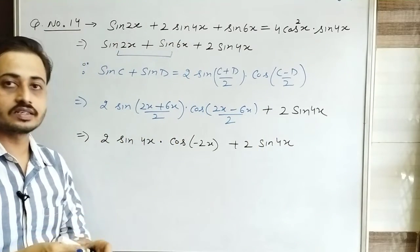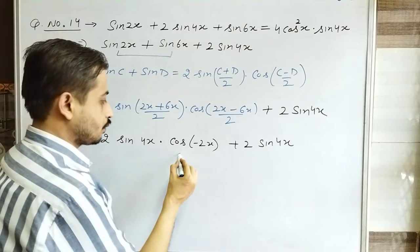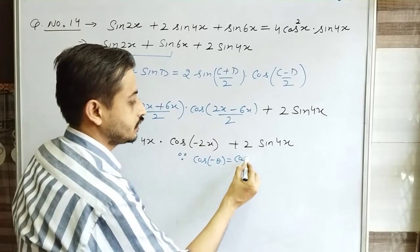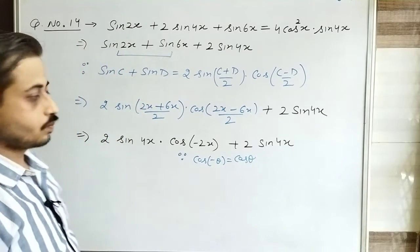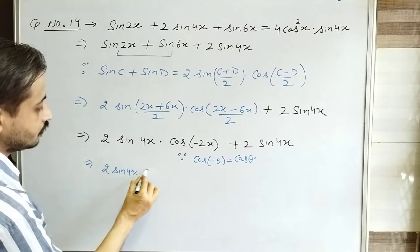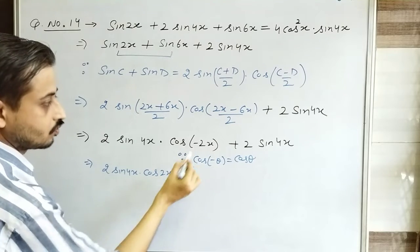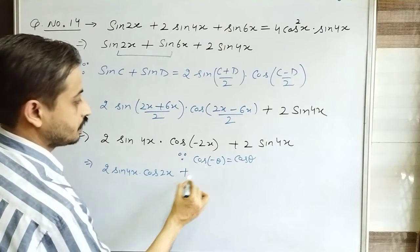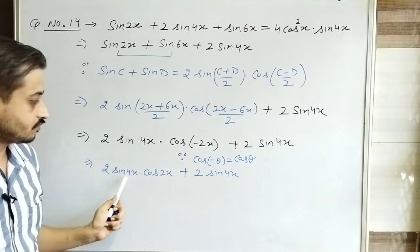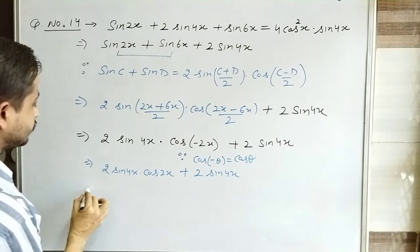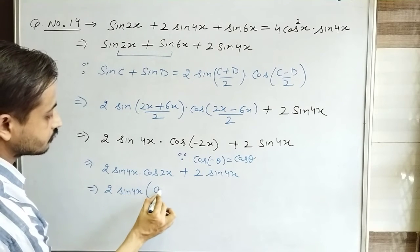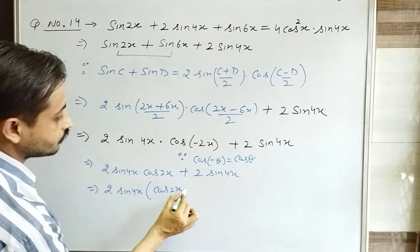Now here another identity applies in the cos term. You know that cos(-θ) = cosθ, so the negative angle becomes positive. This can be written as 2sin4x · cos2x, the negative is removed. Plus the term as it is: 2sin4x. Now 2sin4x is common in both terms, so take it out as common: 2sin4x(cos2x + 1).